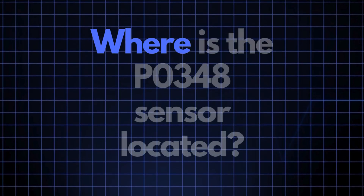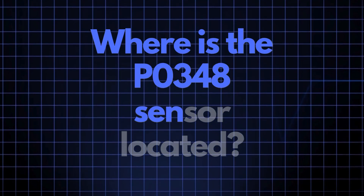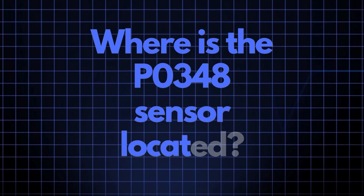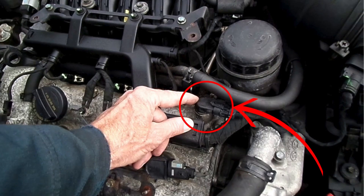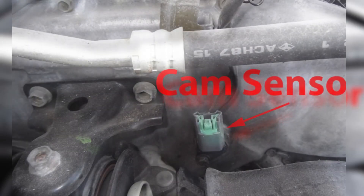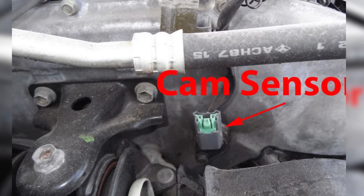Where exactly is the P0348 sensor located? The camshaft position sensor responsible for triggering the P0348 code is usually positioned close to the camshaft. Its exact location can vary depending on your vehicle's make and model, but you'll typically find it either on the valve cover or directly in the cylinder head.